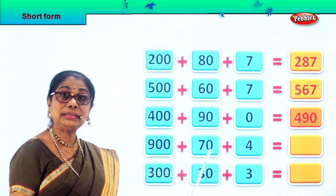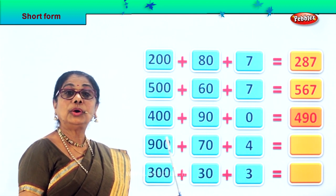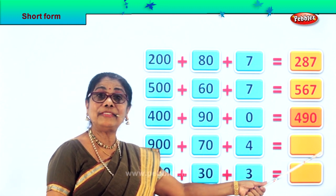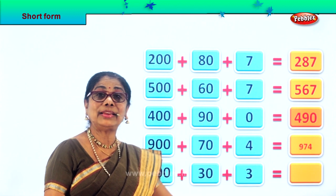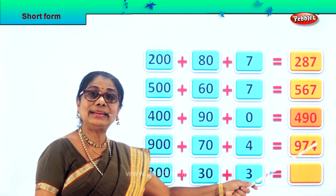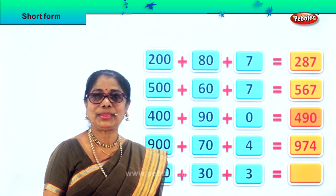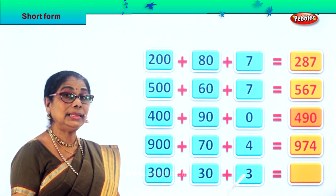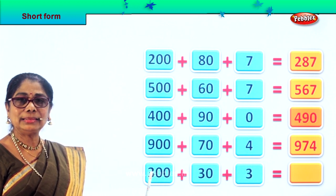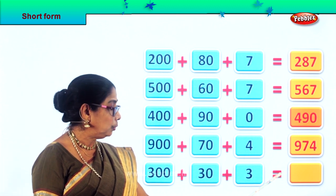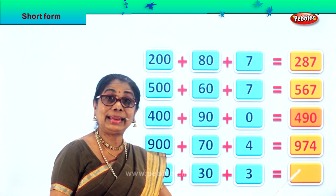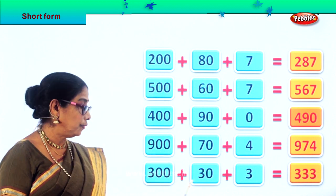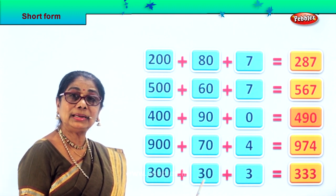Next, what is the short form for 900 plus 70 plus 4? 900 plus 70 plus 4 is equal to 974. Now do the short form for 300 plus 30 plus 3. What is 300 plus 30 plus 3 equal to? 333. 333 is the short form for 300 plus 30 plus 3.